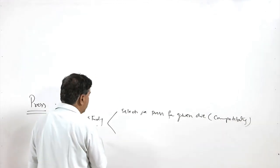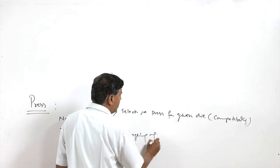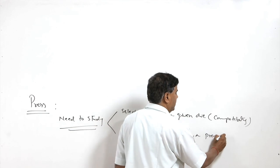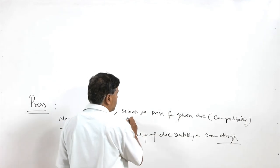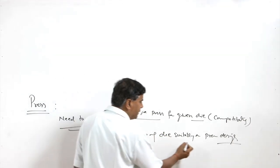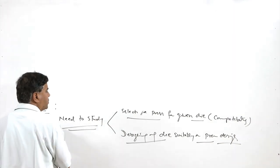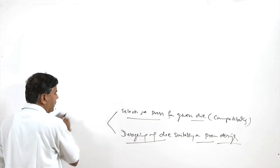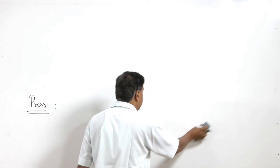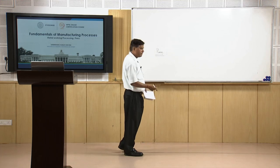Understanding presses also helps in designing a die suitably as per the press design. We can select a suitable press for a given die if we are familiar with the available presses, or familiarity with presses also helps in designing a suitable die. Either way, a suitable press can be selected for a given die, or a die design can be developed based on knowledge of the press.